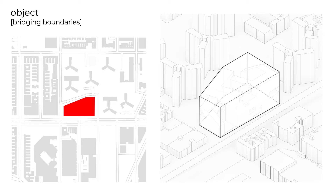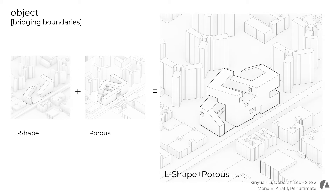We are bridging the two types by proposing a contextualized object that builds relationship with its surrounding context. The contextualized object we are proposing is a result of two massing schemes we studied: setting the L-shaped scheme as a base with a sloped courtyard that becomes a diagonal connection between the viaduct and the tower residence, and adapting the porous scheme to increase FAR and create a series of open spaces in different dimensions to provide view connection in multiple ways.